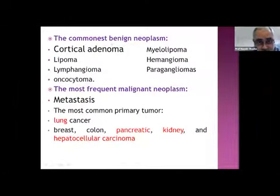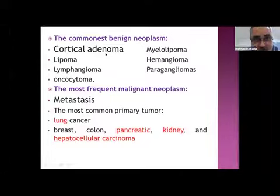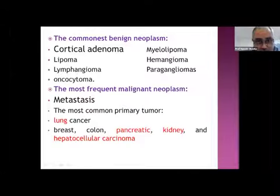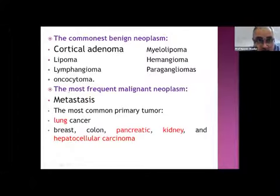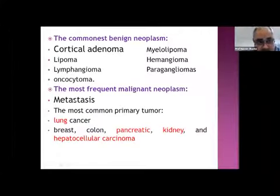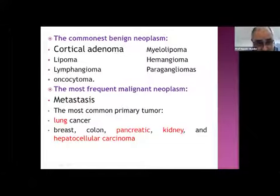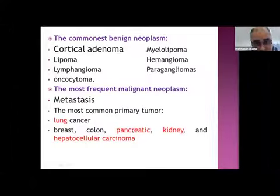Most suprarenal neoplasms are benign. The commonest is cortical adenoma — the most important incidentaloma. Others include myelolipoma, lipoma, hemangioma, lymphangioma, paraganglioma, or oncocytoma. The most frequent malignant neoplasms of the suprarenal glands are metastases. The most common primary tumors sending metastases to the suprarenal are lung, breast, colon, pancreatic, kidney, and hepatocellular carcinoma.